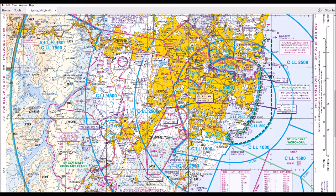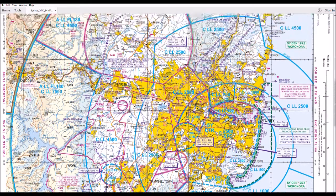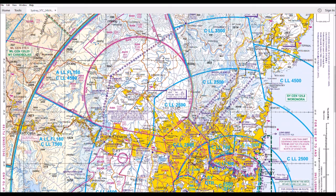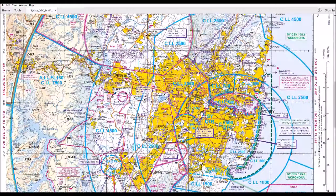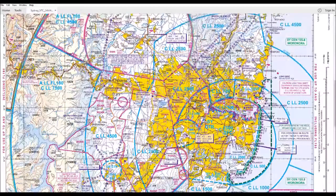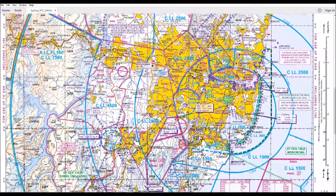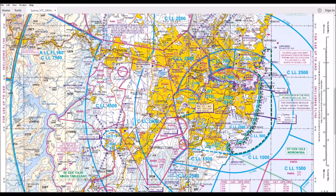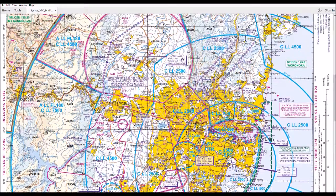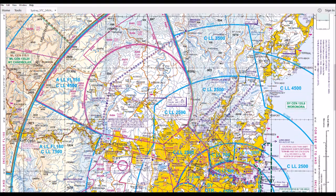We're actually looking at one of the most complicated visual terminal charts for the whole of Australia — a nice place to start if you're a beginner! Airspace is all about giving everyone who wants to fly a place to fly safely, so people aren't colliding and falling out of the sky. As drone pilots, we need to use this chart to figure out what manned aviation is using the airspace for, and then ask the question: where is it safe for us to fly? Where's our airspace? How do we fit in?